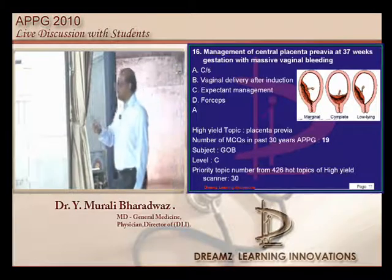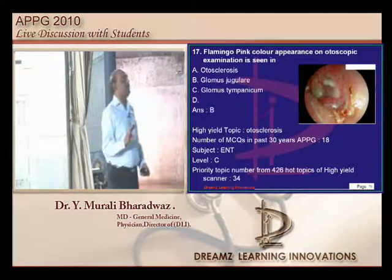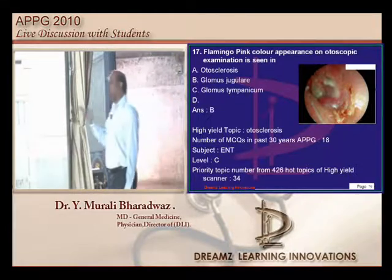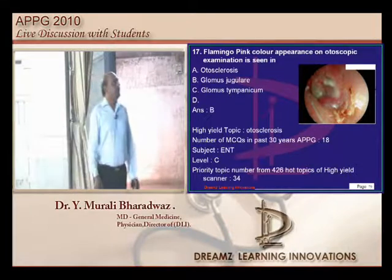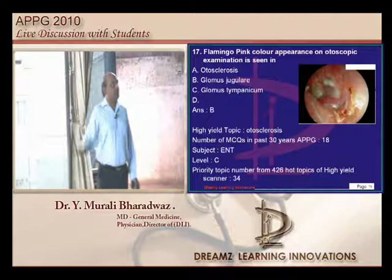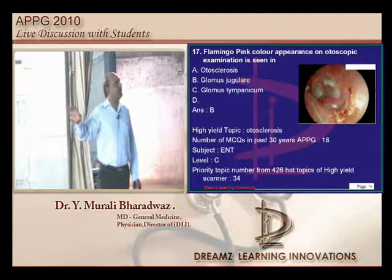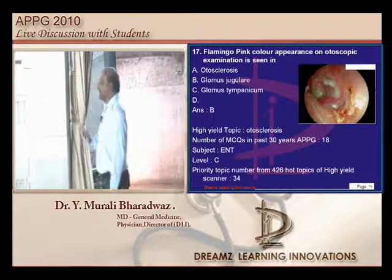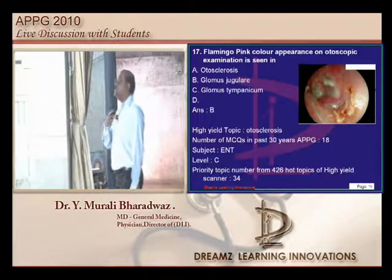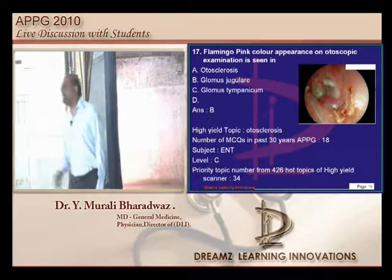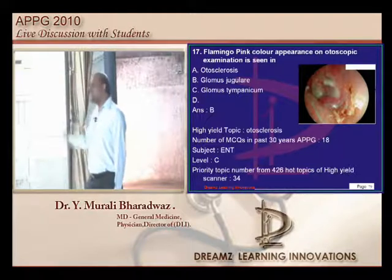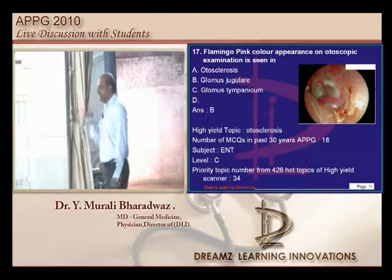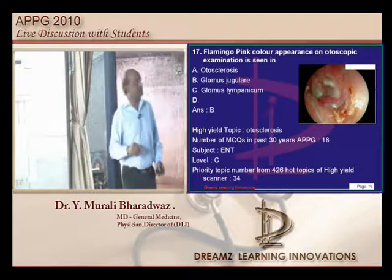What is otosclerosis and glomus jugulare? Questions come regularly on these. The flamingo pink sign is typically seen with otosclerosis — not glomus jugulare. Sorry for the earlier confusion. There is a small correction there.